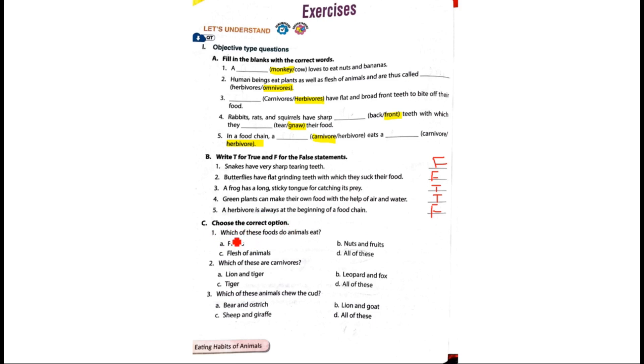Choose the correct options. Which of these foods do animals eat? Plants, nuts and fruits, flesh of animals, all of these.